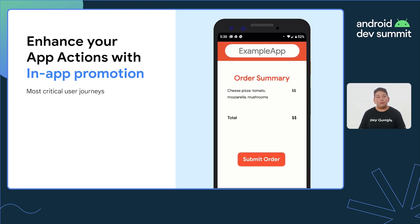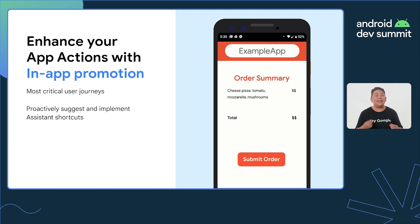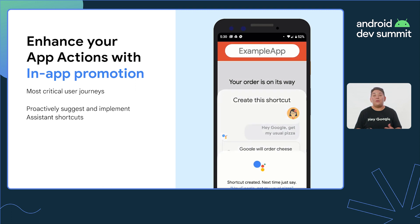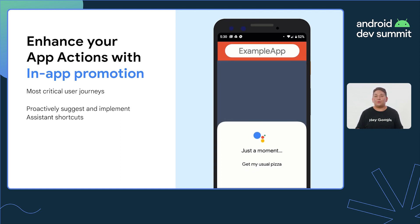For the most critical user journeys, you can suggest the user create an Assistant shortcut in your app — a phrase that triggers a particular shortcut. This is similar to how Assistant shortcuts can be created manually by your user, but the in-app promo SDK enables you, the developer, to proactively suggest and implement Assistant shortcuts to your users. For example, at the end of purchasing a pizza, you can offer the user to create an Assistant shortcut, so next time they could say, 'Hey Google, get my usual pizza.' The Android app opens with the user's preferred pizza information, ready to be ordered.